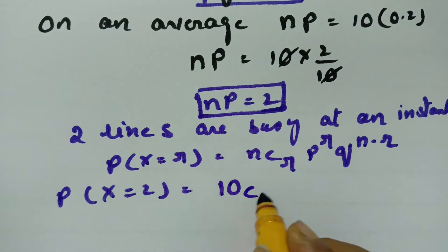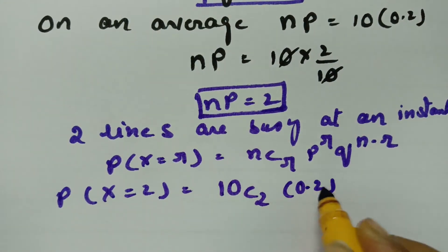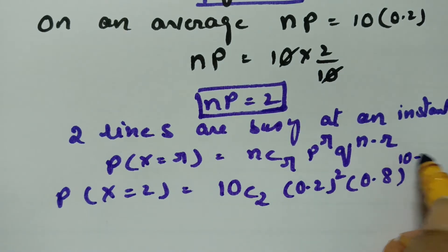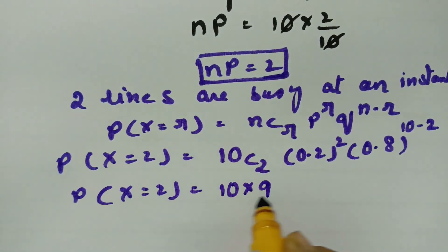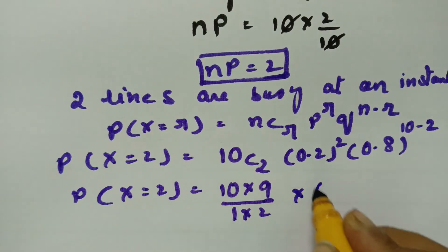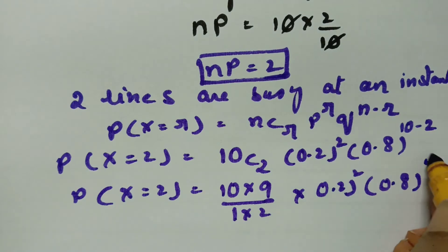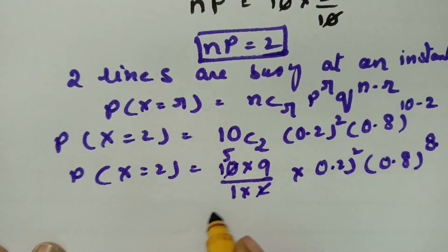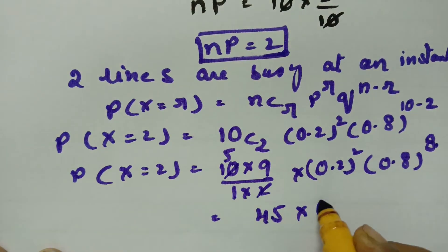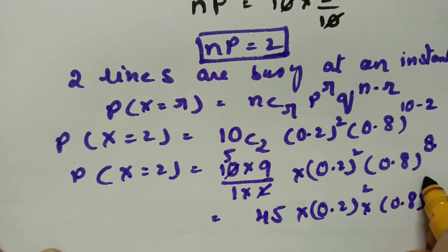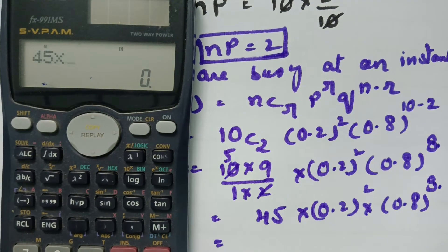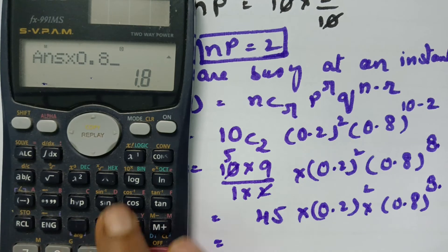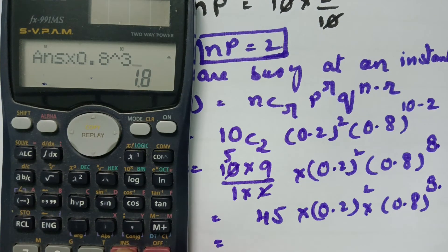Here n is equal to 10, so this becomes 10C2 times 0.2 power 2 times 0.8 power 8, which is 10 into 9 divided by 1 into 2, times 0.2 squared times 0.8 power 8. Simplifying, this is 45 into 0.2 squared into 0.8 power 8.